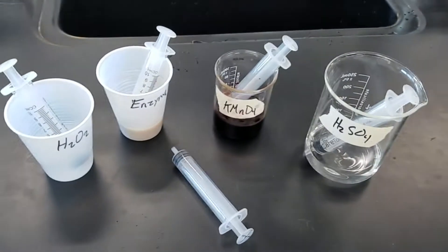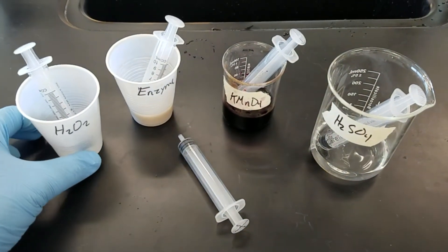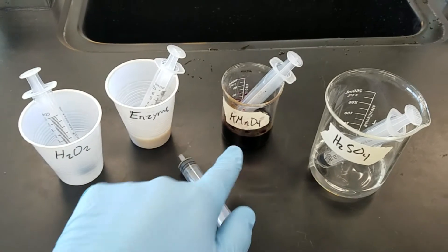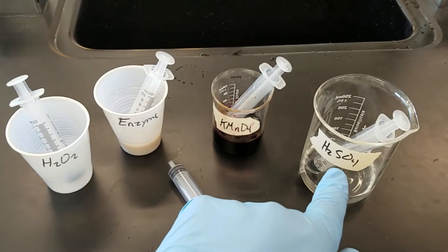In your lab you'll notice four chemicals already prepared. We've got hydrogen peroxide, a yeast enzyme solution, potassium permanganate, as well as sulfuric acid.